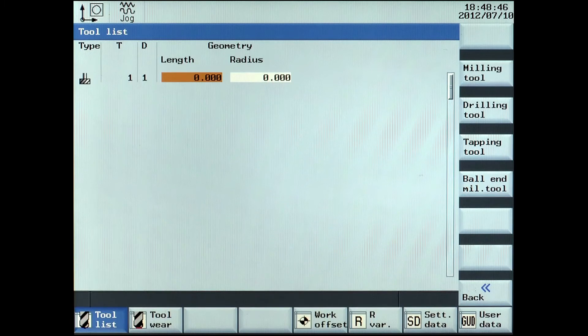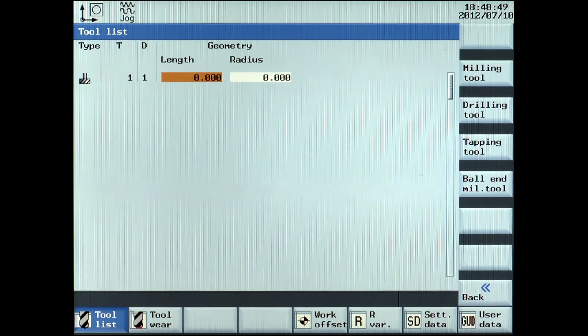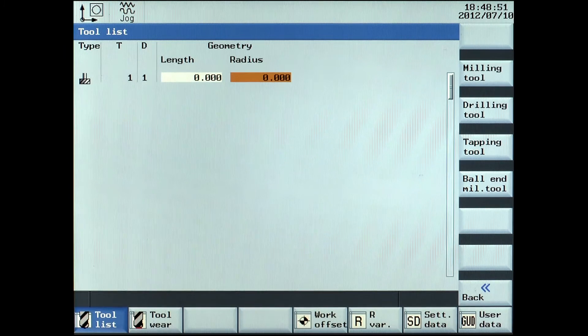Data shown in the tool list is the Z length and the radius of the tool.